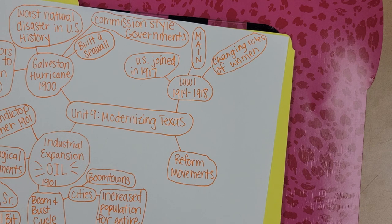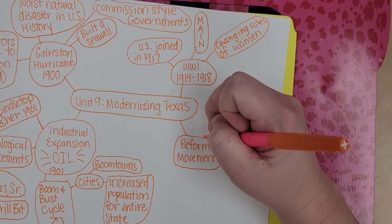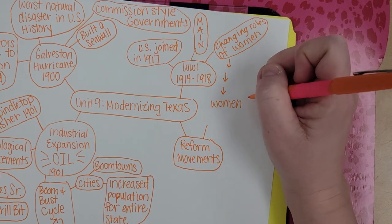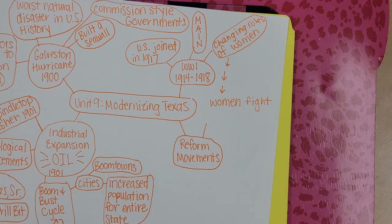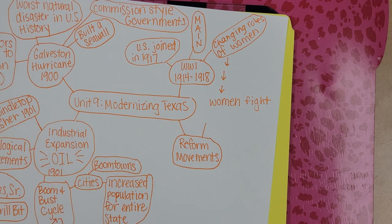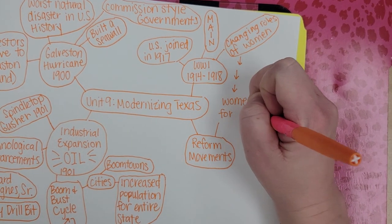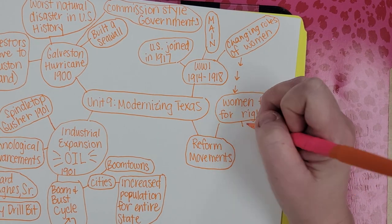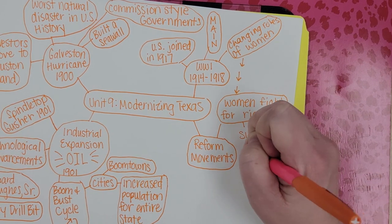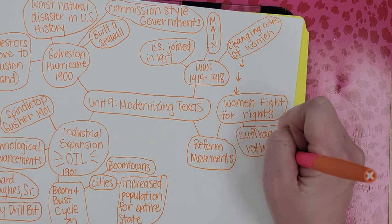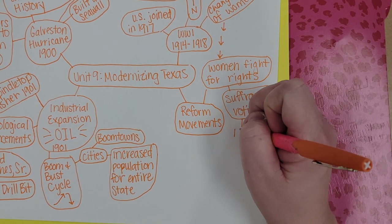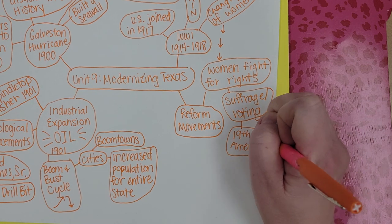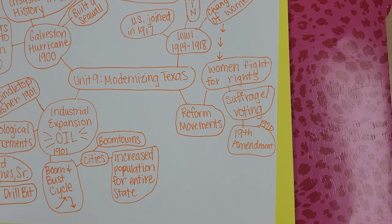All of these changes led to a lot of reforms regarding women's rights. Women started fighting — not literally, but by pushing politicians, being vocal, and holding protests regarding women's rights, specifically the right to suffrage. Suffrage means voting. They did earn the right to vote with the 19th Amendment, and that happened in 1920.